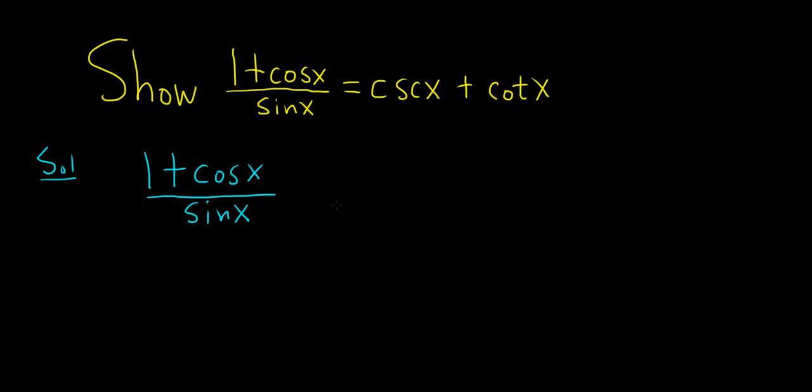And now we have to show it's equal to cosecant plus cotangent. So let's go ahead and break this up. This is really 1 over sine x plus cosine x over sine x.